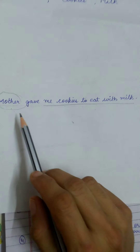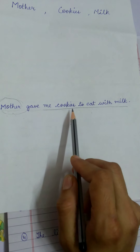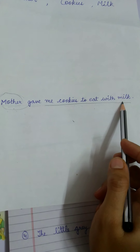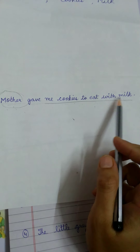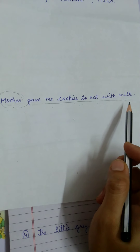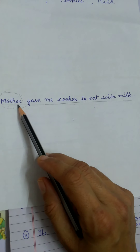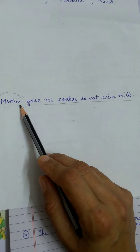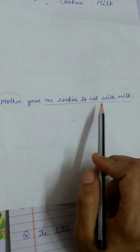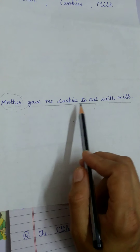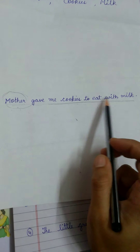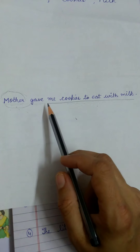Now look at the other sentence: 'Mother gave me cookies to eat with milk.' When I say this, I am talking about someone — that is, I am talking about mother — and then I am talking about an action done by my mother, that is 'gave me cookies to eat with milk.'